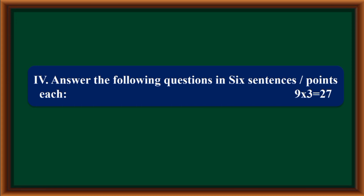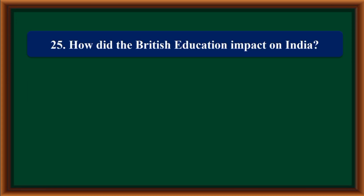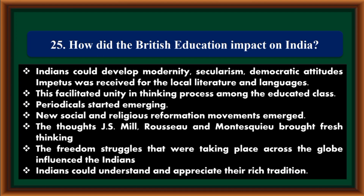Section 4 — Answer the following questions in six sentences or points each. How did British education impact India? Indians could develop modernity, secularism, and democratic attitudes. Impetus was received for local literature and languages. This facilitated unity in thinking among the educated class. Periodicals started emerging. New social and religious reformation movements emerged. The thoughts of J.S. Mill, Rousseau, and Montesquieu brought fresh thinking. Freedom struggles across the globe influenced Indians, and Indians could understand and appreciate their rich tradition.